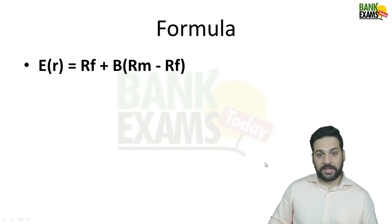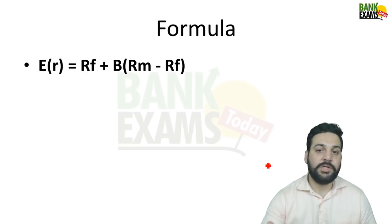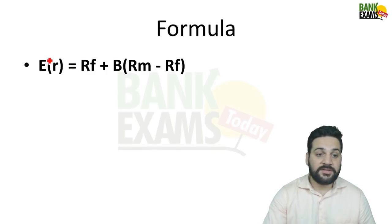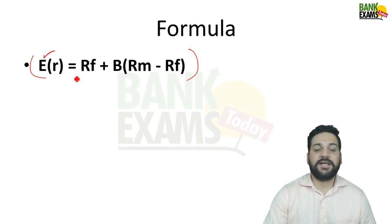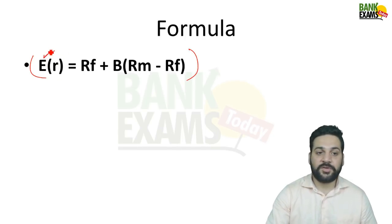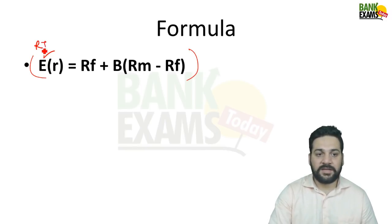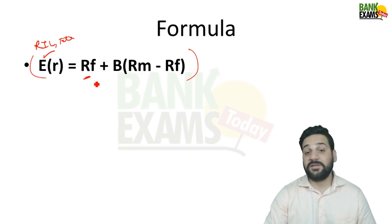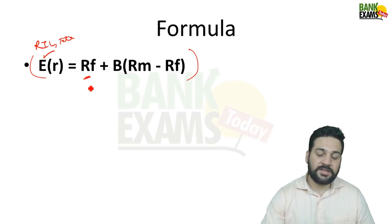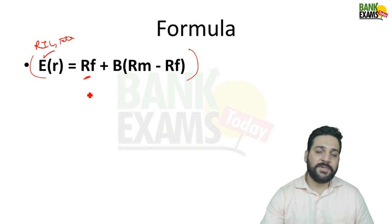Let's start with the simple CAPM formula I covered in my previous video. The formula is: ER = Rf + β(Rm − Rf). Here, ER is the expected return from a specific security — say Reliance Industries — and Rf is the risk-free return, which is the return you get without taking any risk, typically a one-year government bond.